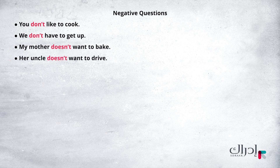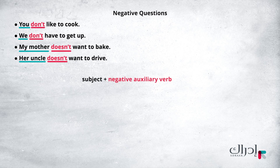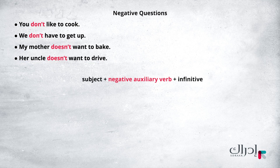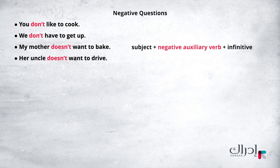Now, take a look at this structure. We are using the subject, followed by the negative auxiliary verb, followed by the infinitive. Let's look at these examples to give you a better idea of how this structure would look like.